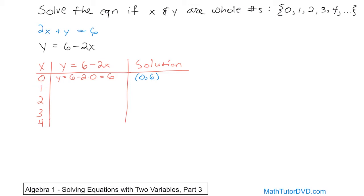Now let's do the same process for x is equal to 1. If x is equal to 1, then y must be 6 minus 2 times 1, which means 6 minus 2, because 2 times 1 is 2. 6 minus 2 is 4. So when x is equal to 1, y must be equal to 4. The ordered pair is (1, 4). Notice that x and y are both whole numbers, so we're good.